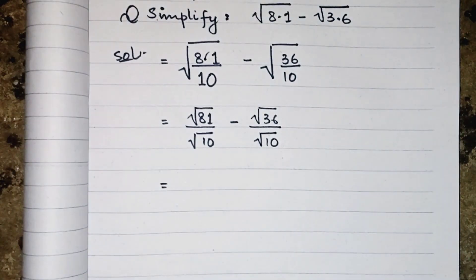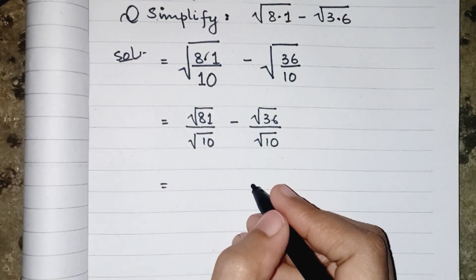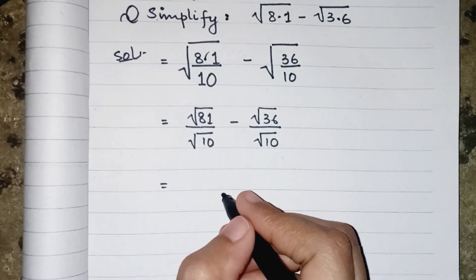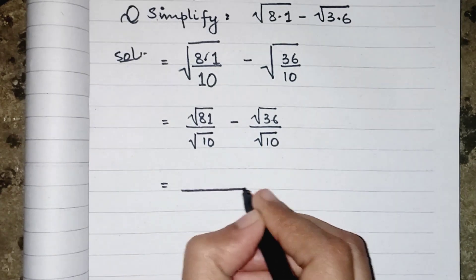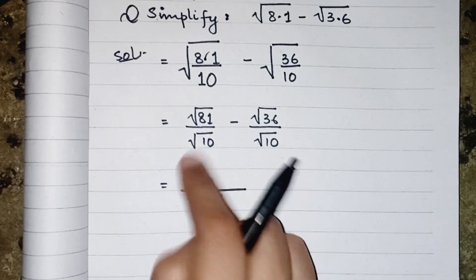Because it's a basic concept: whenever we have fractions and they are added or subtracted, we have to take LCM of the denominators. So we have LCM as under root 10.